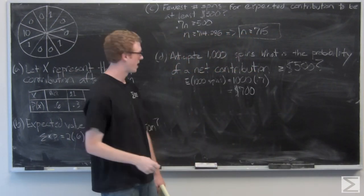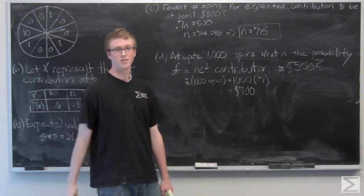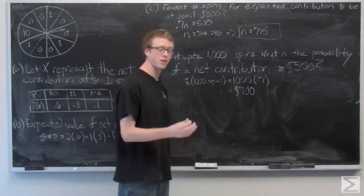The expected value after a thousand spins is going to be 1000 times 0.7, which is going to be $700. Now it's just going to be simple—calculate a z-score to figure out what the probability is.